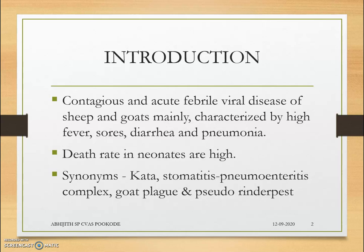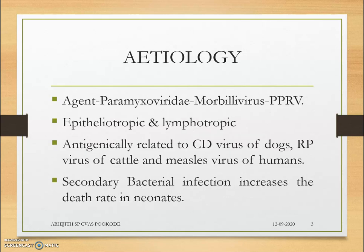Goat Plague is a synonym due to the high death rate. Pseudorinderpest is used because PPR has the same lesions as rinderpest in small animals and is caused by a virus belonging to the same genus as rinderpest virus. The etiological agent belongs to the family Paramyxoviridae, a single-stranded RNA virus. The genus is Morbillivirus, and PPR virus is the species. It is epitheliotropic and lymphotropic, meaning it targets epithelial surfaces and lymphoid cells.